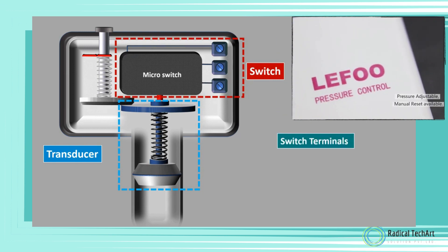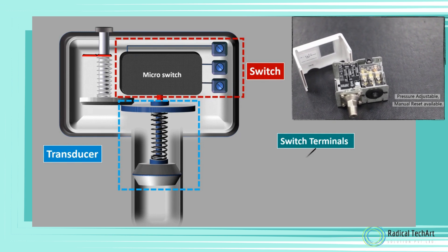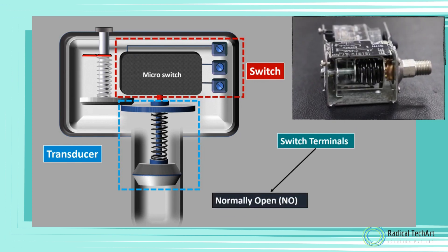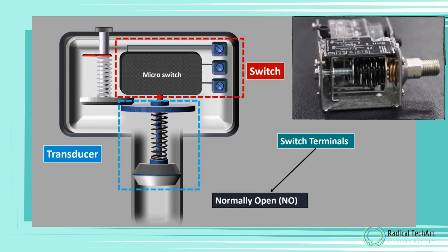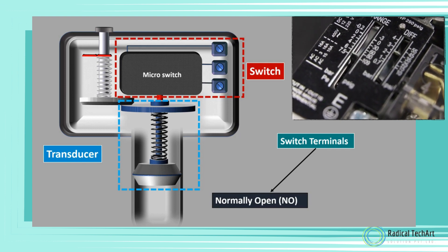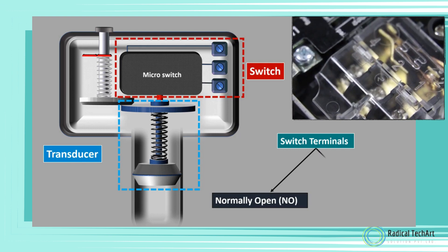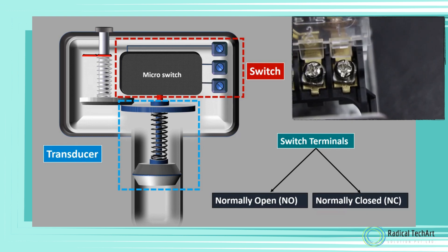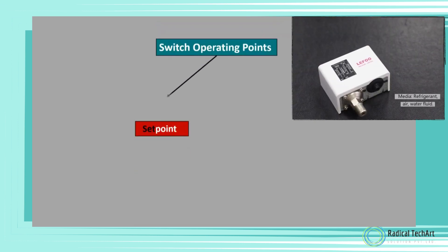Some switches have the switch terminals open when no pressure is connected, which is called normally open switch (NO). When enough pressure is applied, the switch closes. On the other hand, some switches have the switch terminals closed when no pressure is connected, which is called normally closed switch (NC), and when enough pressure is applied, the switch opens.